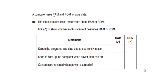A computer uses RAM and ROM to store data — both are types of primary storage, directly accessed by the CPU. RAM is volatile storage, meaning it can only store data when there is power. ROM is non-volatile, meaning it retains data even without power. Stores the program and data currently in use — RAM. Used to boot up the computer when power is turned on — ROM. Contents are retained when the power is turned off — ROM.